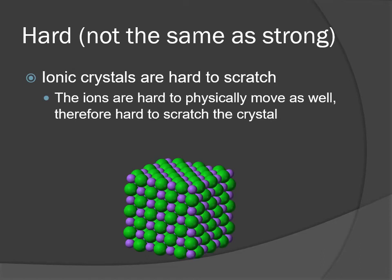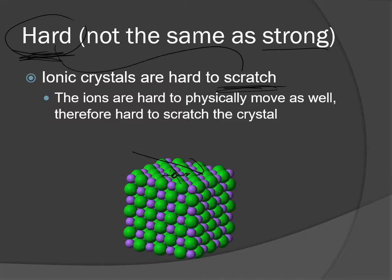From the same cause comes another property: ionic compounds are known to be quite hard. Not the same thing as strong—don't confuse those as the same thing. Think of hardness as the ability to scratch them. Ionic crystals are really hard to scratch. If you tried scratching an ionic crystal, you'd be trying to move the ions away from their relative position, and again they're surrounded by oppositely charged ions. So doing that is going to be difficult, and therefore ionic crystals end up being quite hard—just make sure you're thinking that means hard to scratch, not strong.